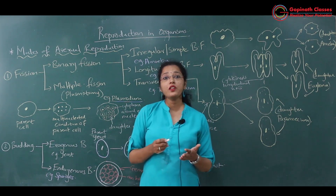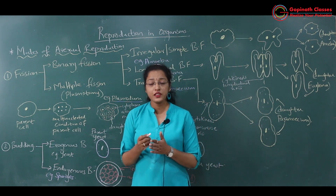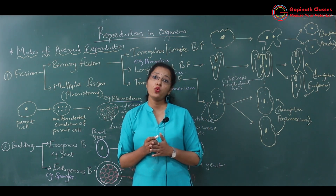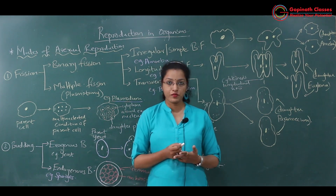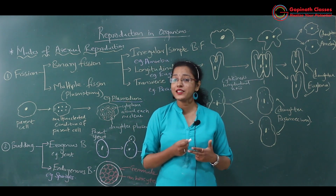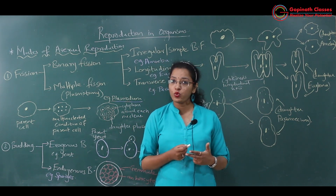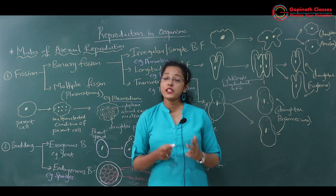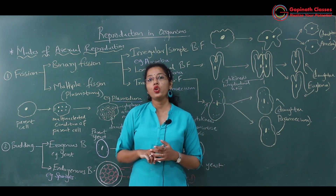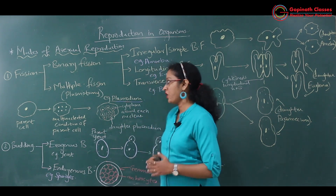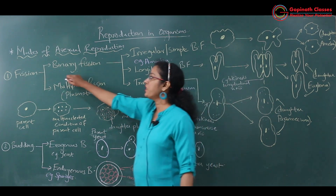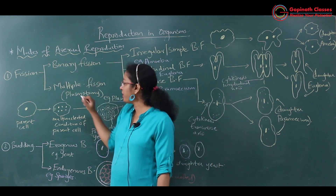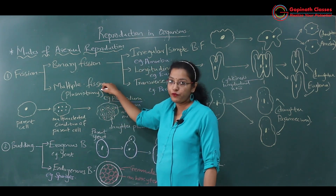What is fission? Fission is the process in which the parent organism divides into two daughter organisms. How does the parent organism divide into two daughter organisms? There is firstly nuclear division followed by cytoplasmic division. Fission is of two types: first is binary fission and second one is multiple fission.